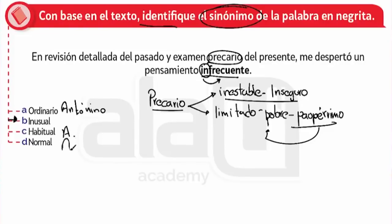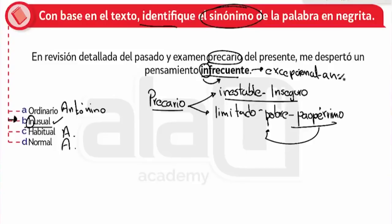Normal también sucede siempre, por lo tanto es antónimo. Por lo tanto, el término inusual, que tiene el prefijo in- que también es negación, es el sinónimo. En consecuencia, el literal B es el que corresponde. De infrecuente también podemos poner otros sinónimos como excepcional, también anómalo o desusado. La respuesta correcta ha sido la B.